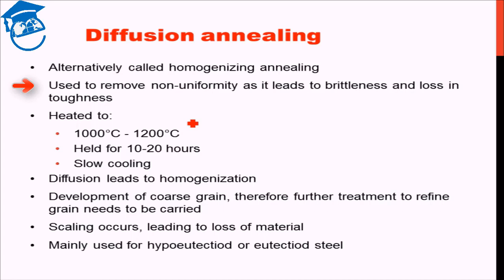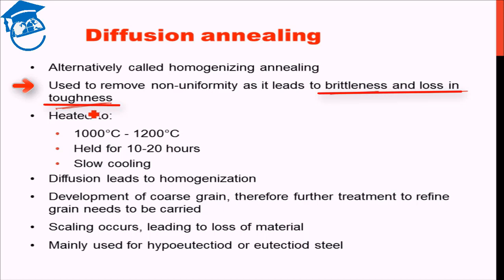Therefore, diffusion annealing is basically exposing the material to high temperature for homogenization. Why would we like to remove the non-uniformity? Because the presence of non-uniformity leads to brittleness and loss in toughness of the material. So by undoing the non-uniformity, we get a more ductile material and something which is tougher.